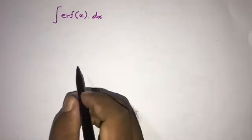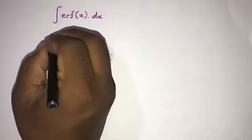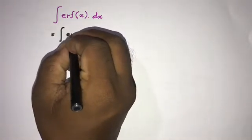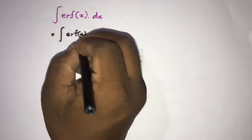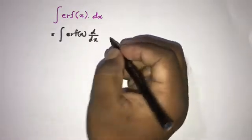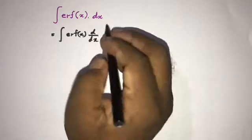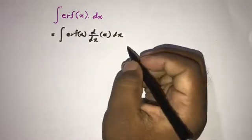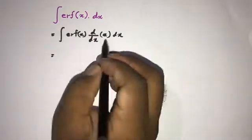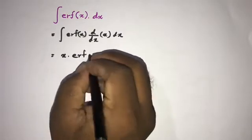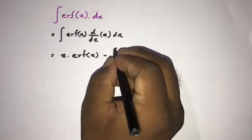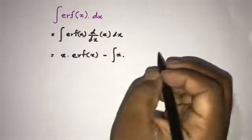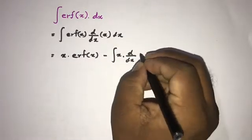We can use the integration by parts method. We take the first function as erf(x) and the second as 1. Integrating 1 gives us x. So the first term is x times erf(x) minus the integral of x times the derivative of erf(x) dx.